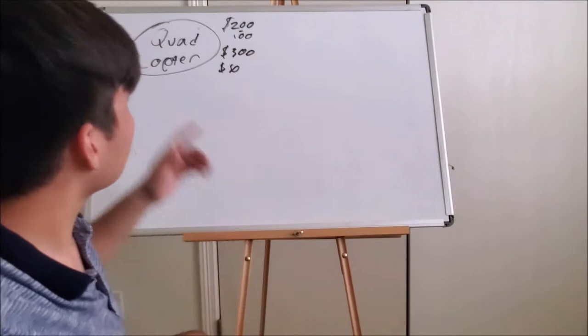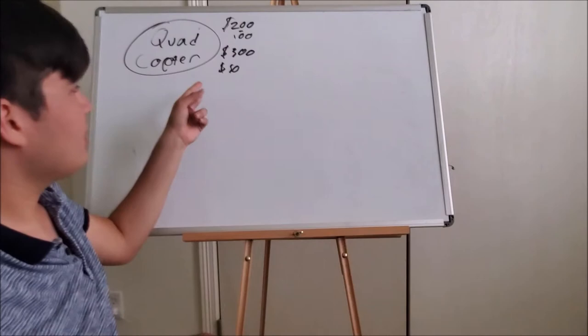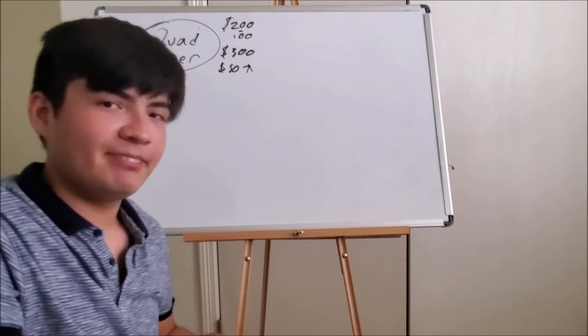Now you might be surprised: a quadcopter really that expensive to build? Well, not entirely. Apparently you can get the kit and the build for it for between $100 and $200. What ends up being expensive are the goggles and the remote control. They're probably higher than $50, but I honestly don't have a solid number on me right now.